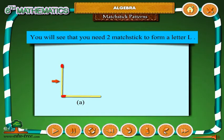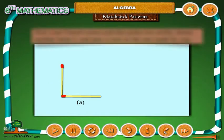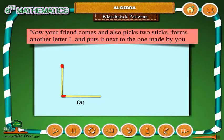You will see that you need two matchsticks to form a letter L. Now, your friend comes and also picks two sticks, forms another letter L and puts it next to the one made by you.